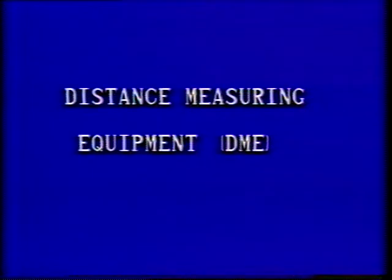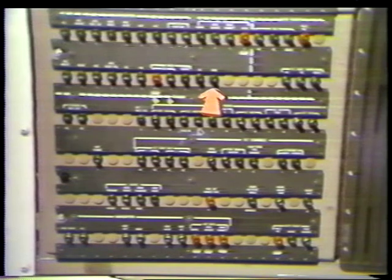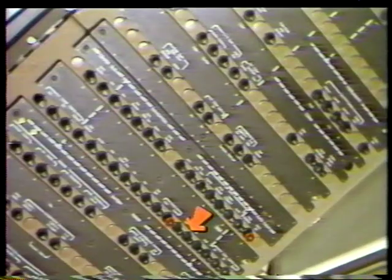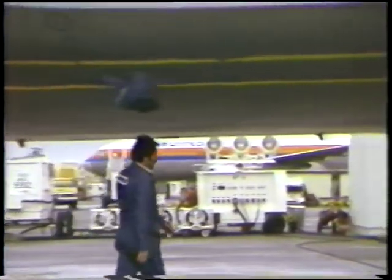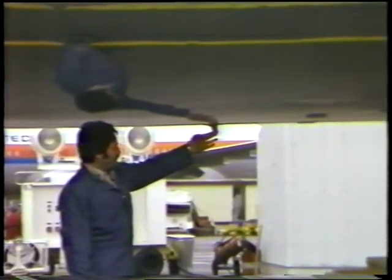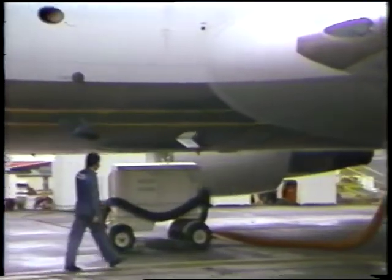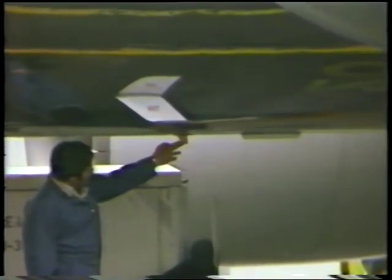The next system is the Distance Measuring Equipment system, or DME. Power is provided through the left and right DME circuit breakers on the P11 panel. The DME antennas are located on the bottom of the fuselage: the left antenna at station 555 and the right antenna at station 665.